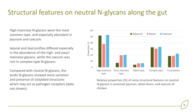High mannose N-glycans were especially abundant in jejunum and cecum. Jejunal and ileal profiles differed especially in the abundance of high and paucimannose glycans, while the cecum was rich in complex type N-glycans.